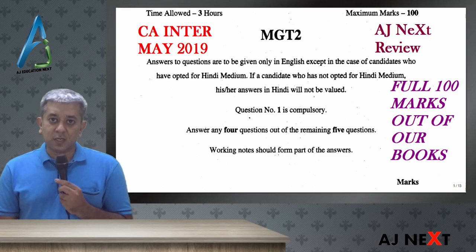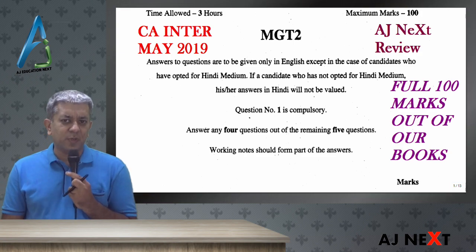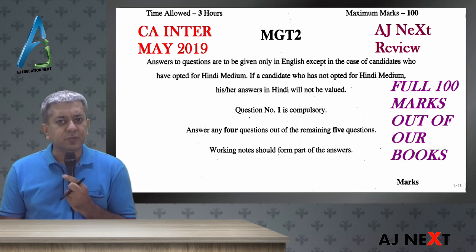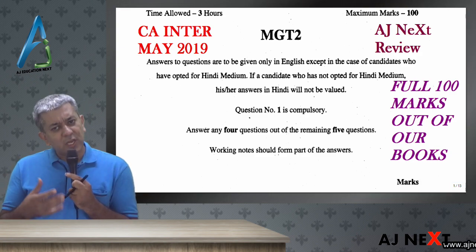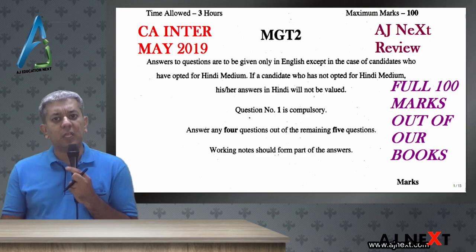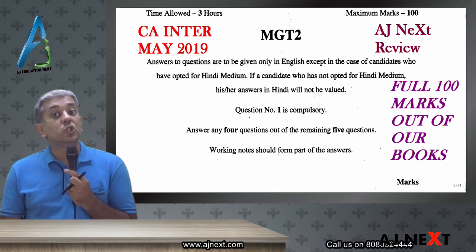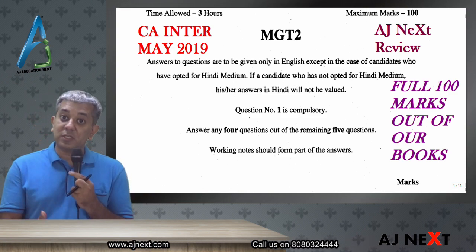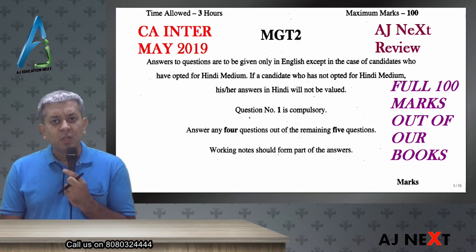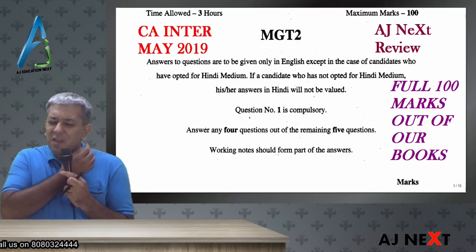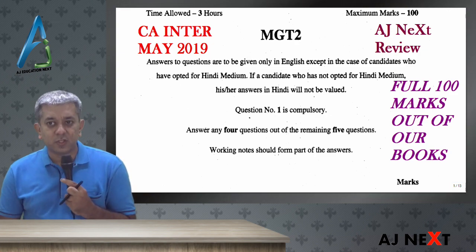So I will start with a review. First thing — papers were not very difficult. As expected, it was nothing very tough. They tried to cover the entire portion of the subject, and almost every chapter was covered — whether it was material costing, labor costing, contract costing, operating costing, joint products, by-products, process costing, standard costing, marginal costing, budgetary control, unit and batch costing. Everything was covered. Hats off to the institute for making a very nice paper.